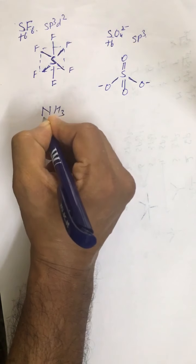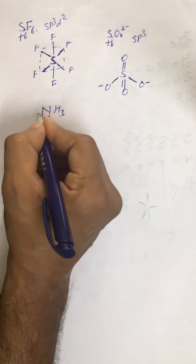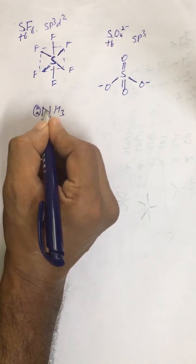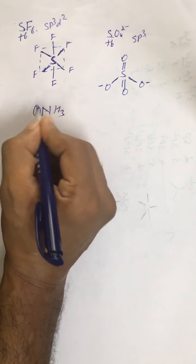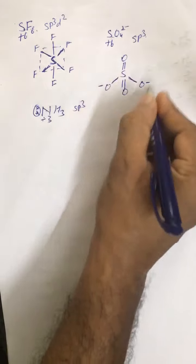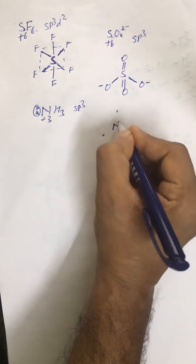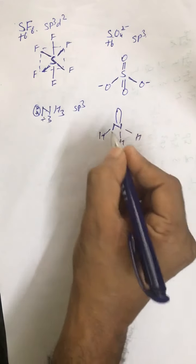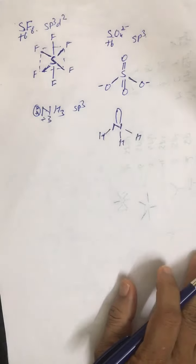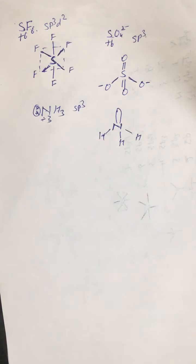For ammonia (NH₃), nitrogen has oxidation state −3, group number 5, so one lone pair is present. Nitrogen is bonded to three hydrogens plus one lone pair in a hybrid orbital: 3 + 1 = 4, giving sp3 hybridization. Drawing nitrogen at the center tetrahedrally, one corner is occupied by the lone pair and three corners by hydrogen atoms — making the shape pyramidal, not tetrahedral.